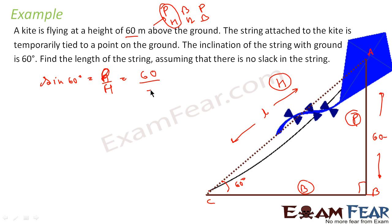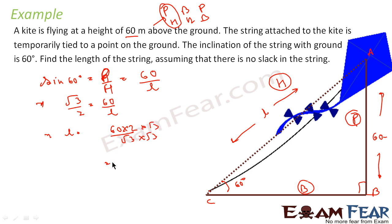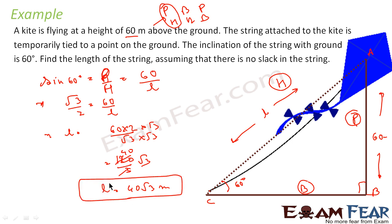We need a relation between H (hypotenuse) and P (perpendicular). Since P is given (60 meters) and we need H, we use sin 60°. So sin 60° = P/H = 60/L, and sin 60° = √3/2, giving L = 60 × 2/√3. Rationalizing: L = 120/(√3) = 40√3 meters. The length of the string is 40√3 meters. We used sine because perpendicular was given and we needed hypotenuse — the relation between them is best expressed by sin theta.